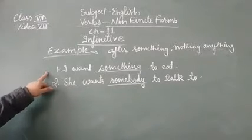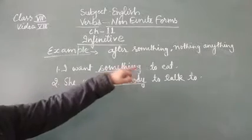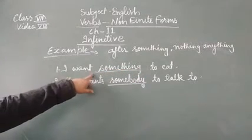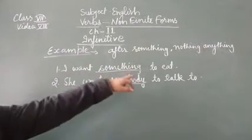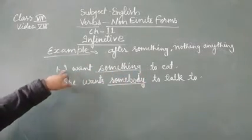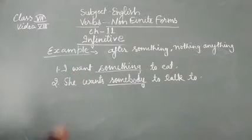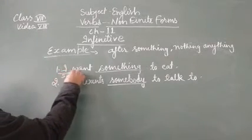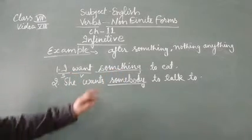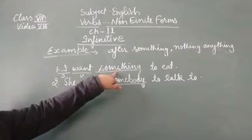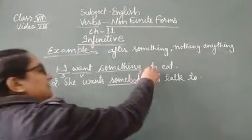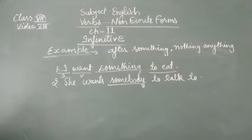See the first one. I want something to eat. Here in this sentence, something is given before to eat. What is to eat? It is an infinitive. I want - here this I is a subject, want is a verb, main verb. And this is an addition word, something, before an infinitive, to eat.